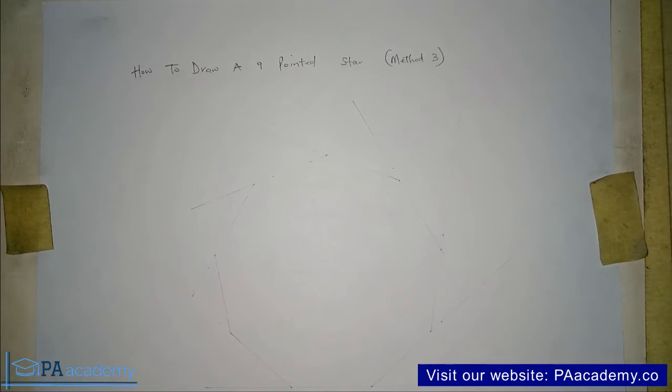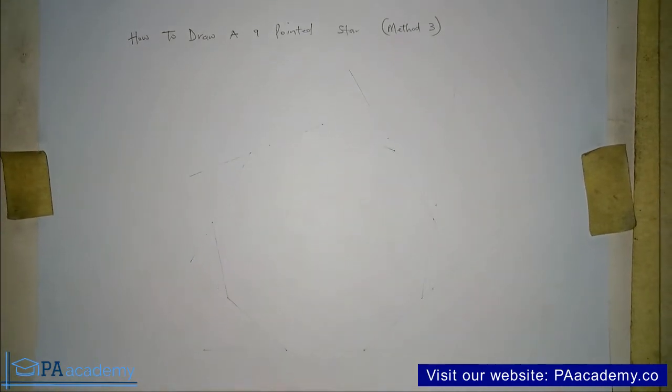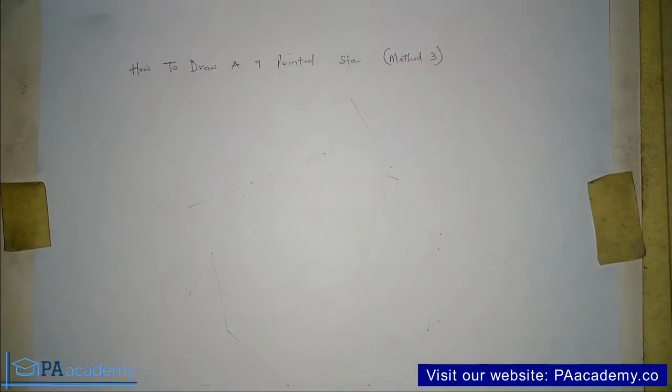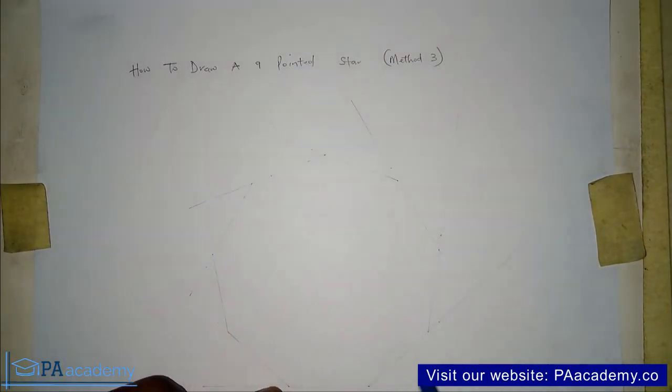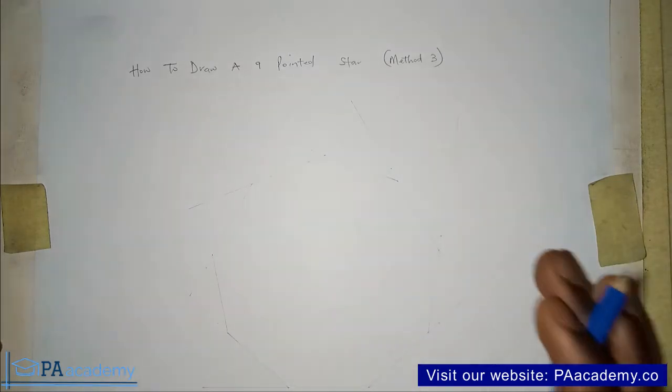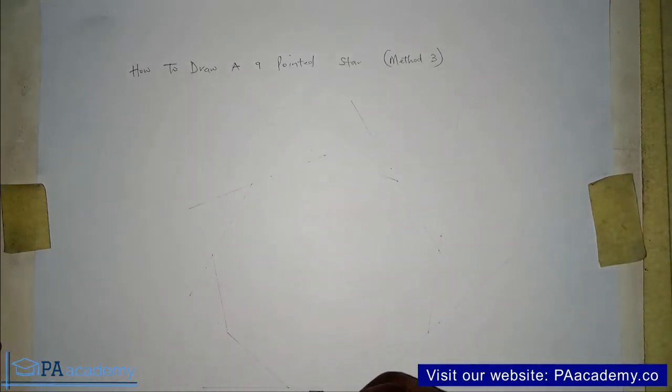In drawing a nine-pointed star, what you're going to need is a nonagon. If you look closely at what I'm having here, you'll see that I'm having a nonagon already on the screen. I've drawn it already just to save time. What you actually need from this nonagon are the vertices. That's why I have my nonagon drawn with a faint line. I can barely see it.